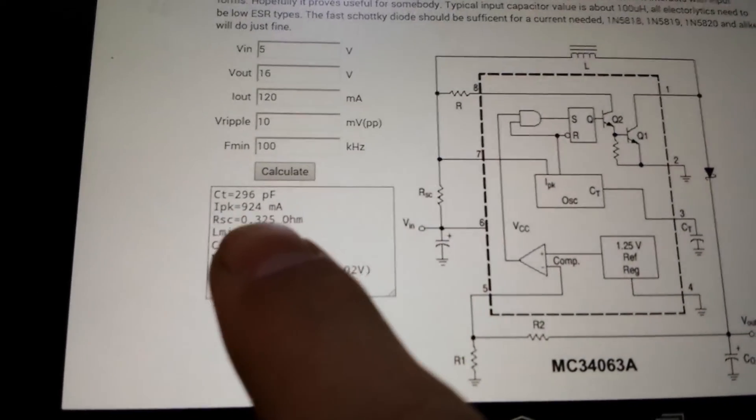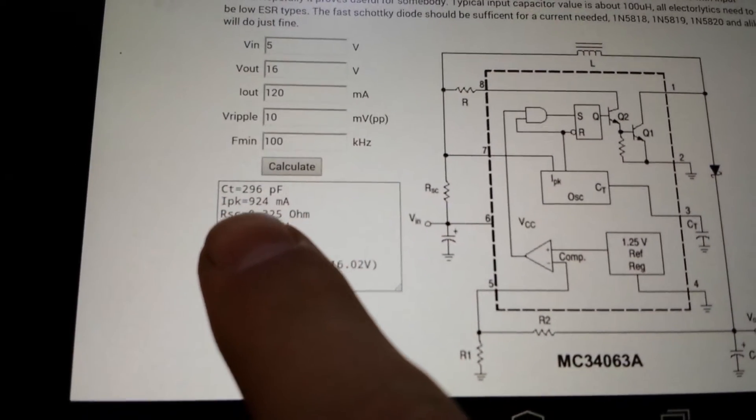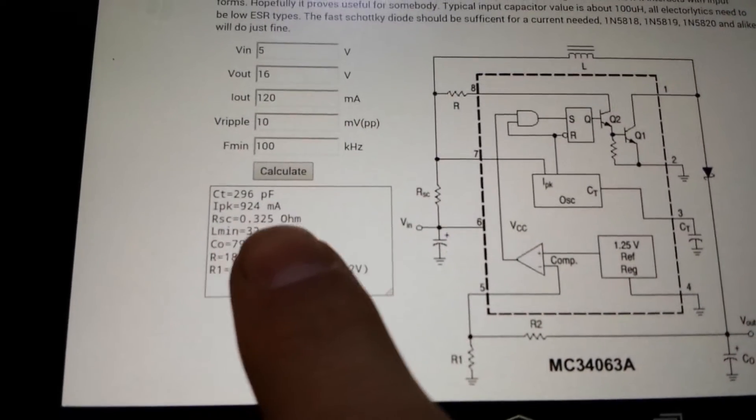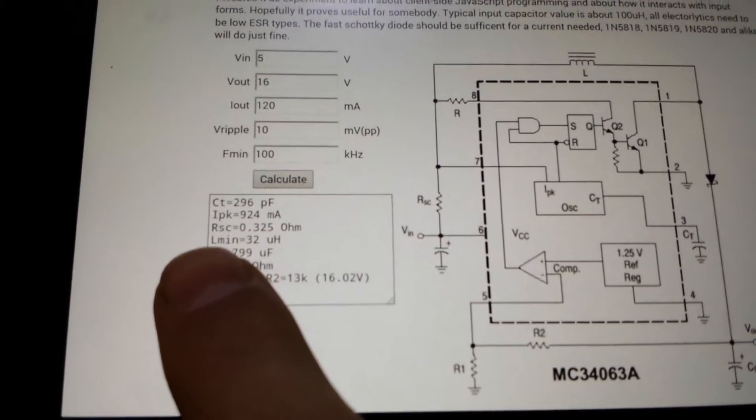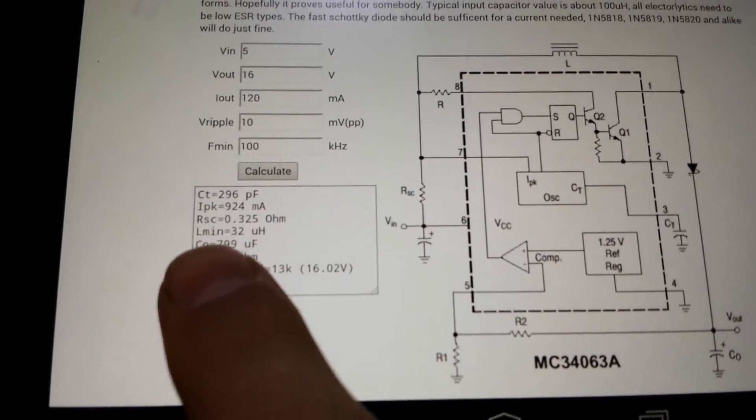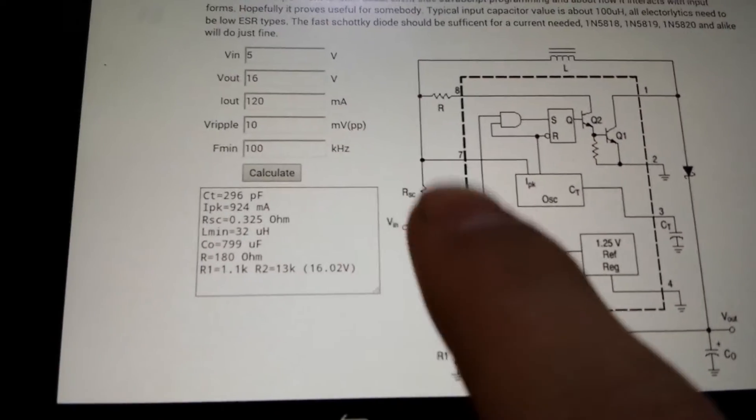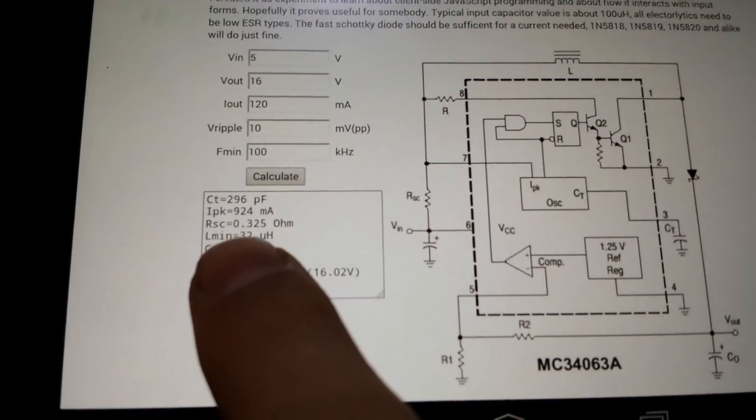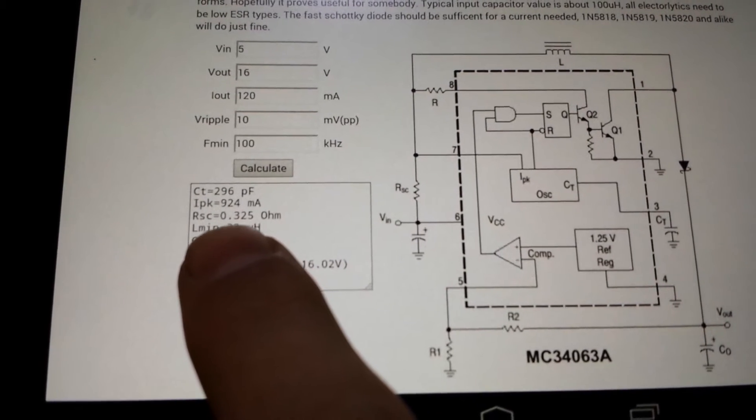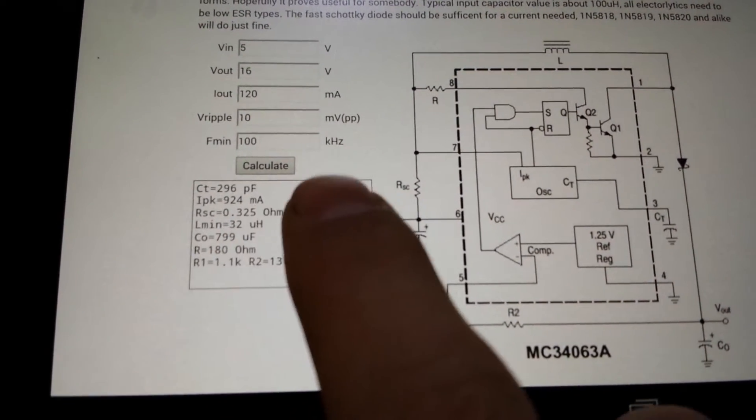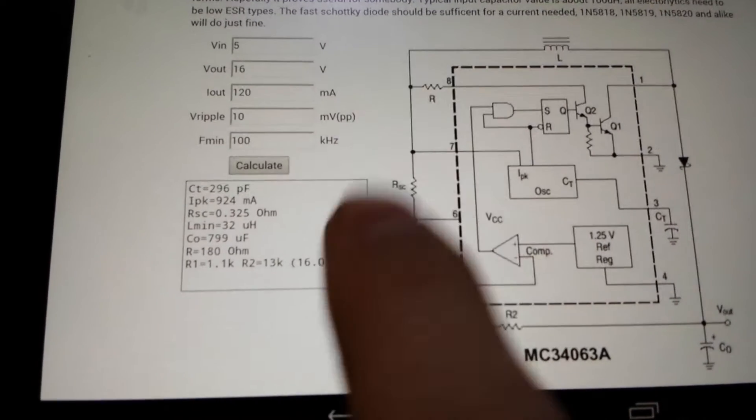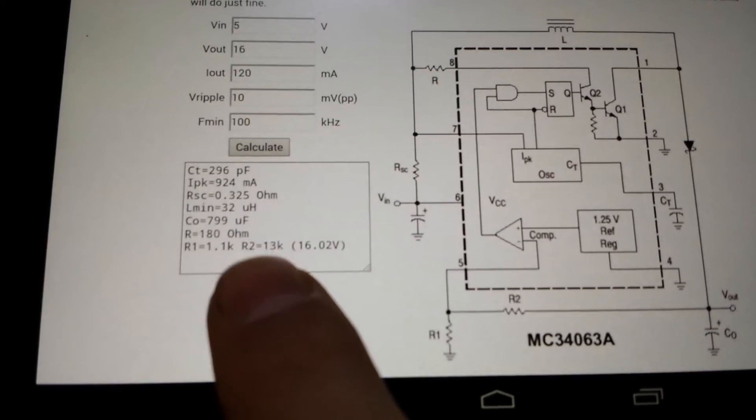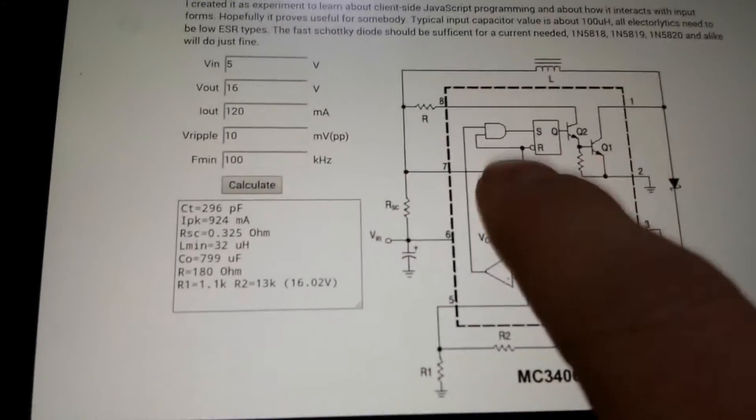And of course, it's not super accurate, because 296 picofarad, I'm pretty sure you will never find that unless you use a variable capacitor, and same thing for the resistor. So, I've put in the basic values that I had in hand. Actually, I put a 33 microhenry choke, I have a 0.22 ohm resistor, I have a 180 ohm resistor, that's pretty common, and R1 is actually 1K, and R2 is 12K, and it gives me roughly 16 volts.